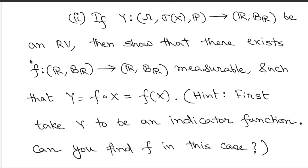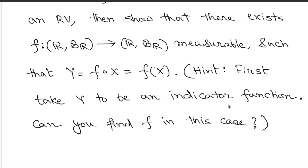If Y is measurable with respect to σ(X), then you can write Y as a function of X — that is, Y = f(X) for some explicitly constructed Borel measurable f: R → R. The hint for this exercise is to start with Y being an indicator function and explicitly construct f, then move on to simple functions, non-negative measurable functions, and then general measurable functions. With this we stop here and will continue the discussions in next week's lectures.